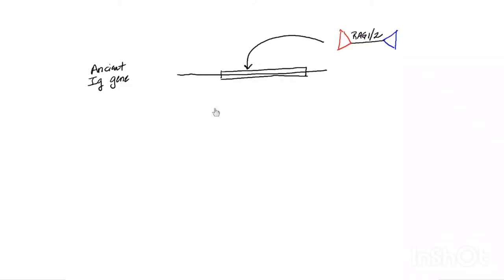So now I'm going to show you the mobile element as it appears. Here's the mobile element. And here's the other side of it. And it's hopped in to that location there. And so the ancient immunoglobulin gene has now been split into two pieces. And here are the two pieces.